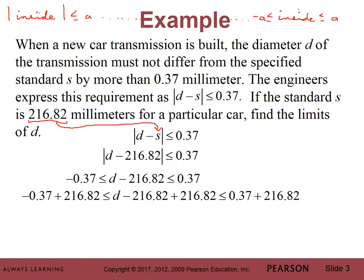And that'll give us what we want. Here, obviously, these two things are opposites, so they'll just go away. And then we'll add the numbers on the outsides. And those are the limits of D. It can't be any greater than 217.19 millimeters. It can't be any less than 216.45 millimeters. The diameter of the transmission must be at least 216.45 millimeters, but not greater than 217.19 millimeters.